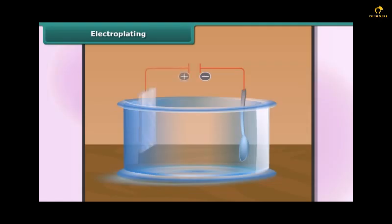The positive terminal is connected to the bar of the metal, for example pure silver. Thus the spoon acts as the cathode in the electrolysis while the bar of the metal acts as the anode.